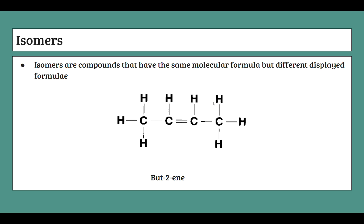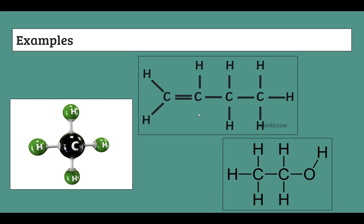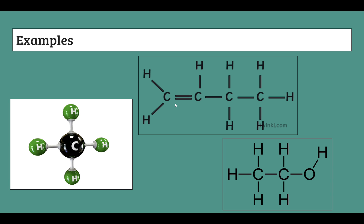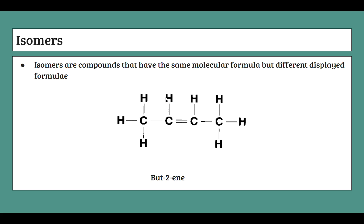Isomers are compounds that have the same molecular formula but different displayed formulae. We have two versions of butene — both have four carbons and a double bond, but the double bond is in a different location. When the double bond is between the first and second carbons, it's but-1-ene. When it's between the second and third carbons, it's but-2-ene. So the location of the double bond changes how we name it, giving us two different isomers.